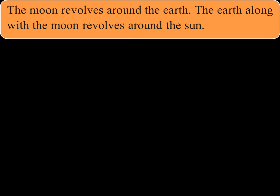Then, from full moon to new moon, during waning, the order is: full moon, waning gibbous, last quarter, waning crescent, and new moon. So, I hope it is clear that during the waxing and waning of the moon, it revolves around the earth.